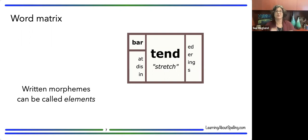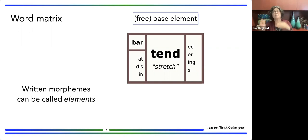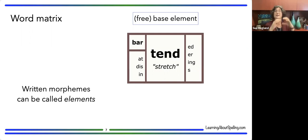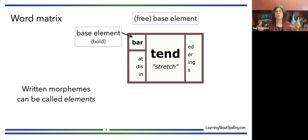We have a written morpheme at the center of this matrix spelled t-e-n-d — that's a base element. Some people call it a base word or root, but 'base element' clarifies we're talking about morphology and spelling. Every word has at least one base as its foundation. This base is a free base, meaning t-e-n-d forms a word all by itself: 'tend.' We also have a second base element b-a-r, which means we can create the compound word 'bartend.'